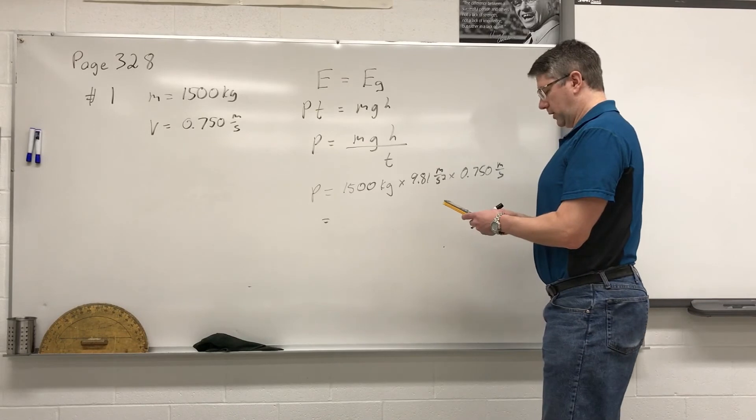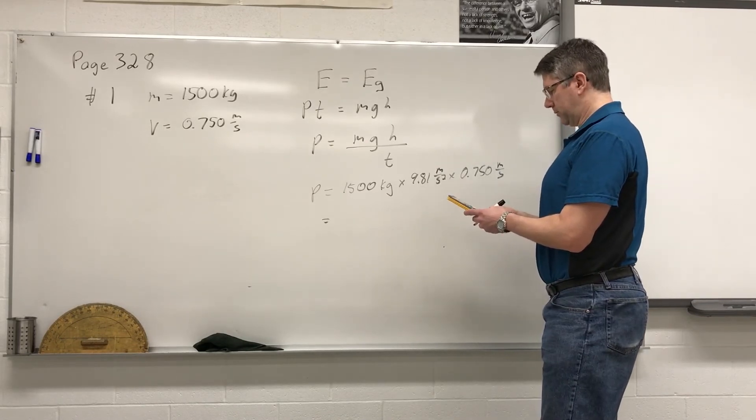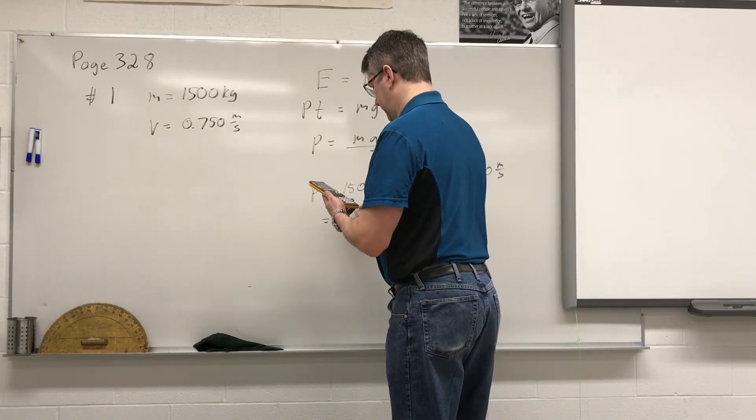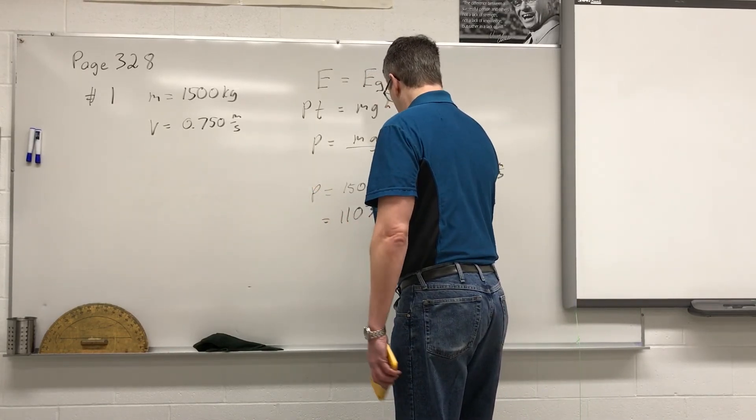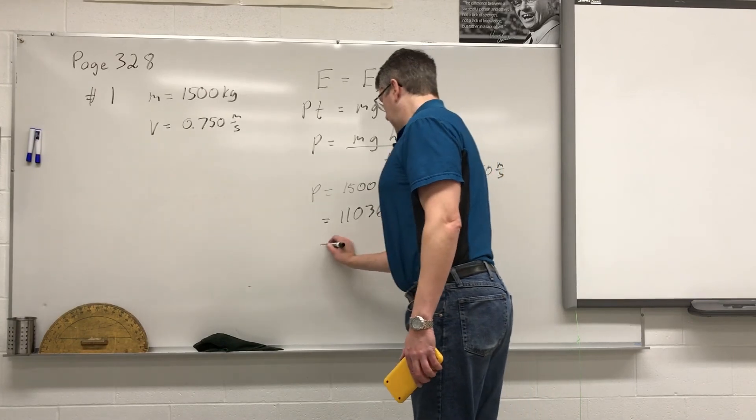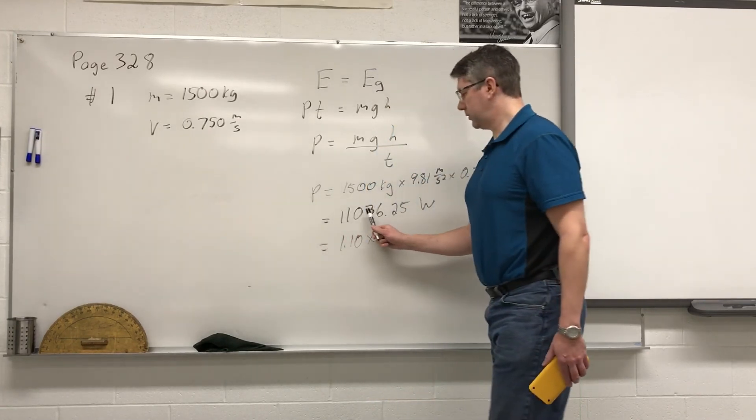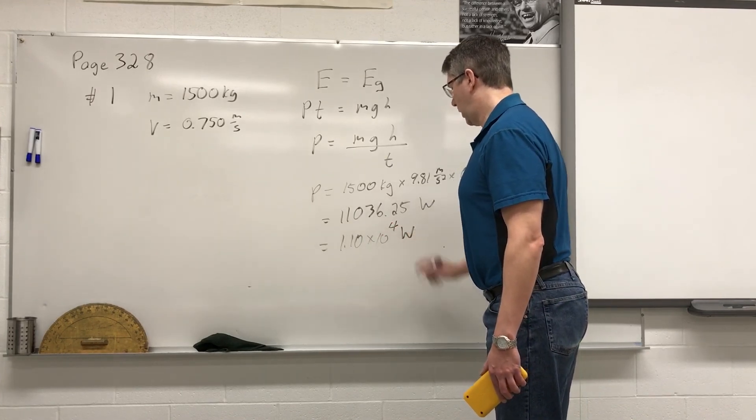So we're going to have 1,500 times 9.81 times 0.75, which gives us the value of 11,036.25 watts, or 1.10 times 10 to the power of 4 watts.